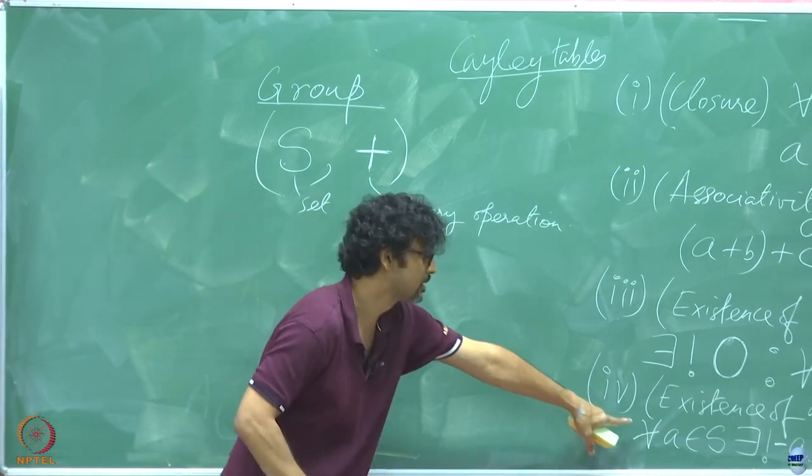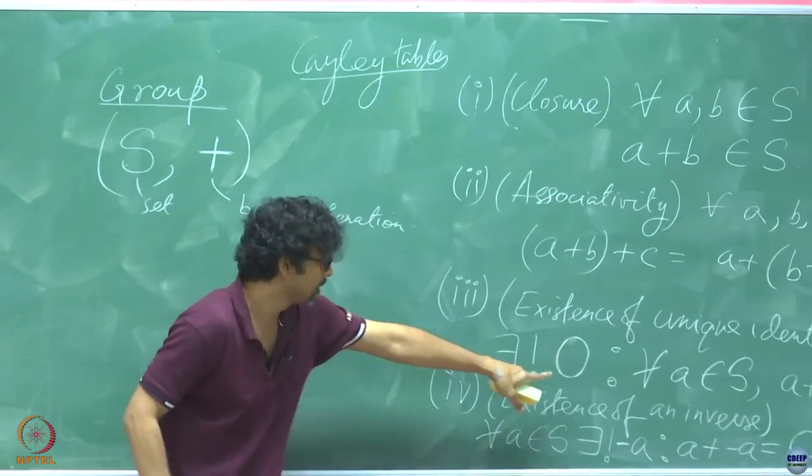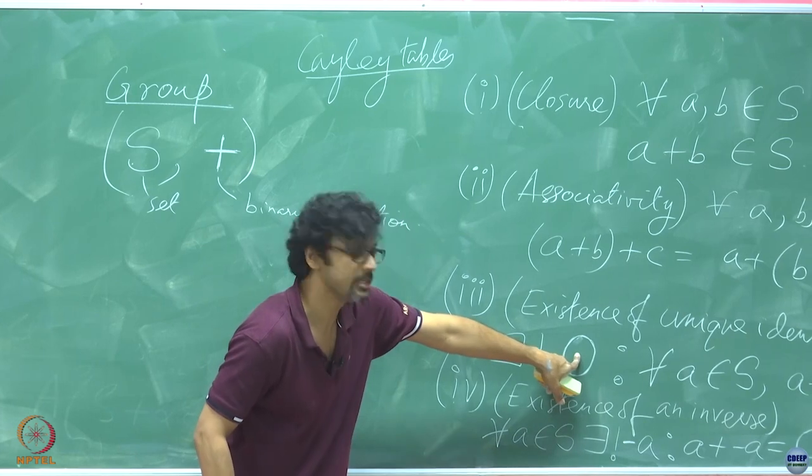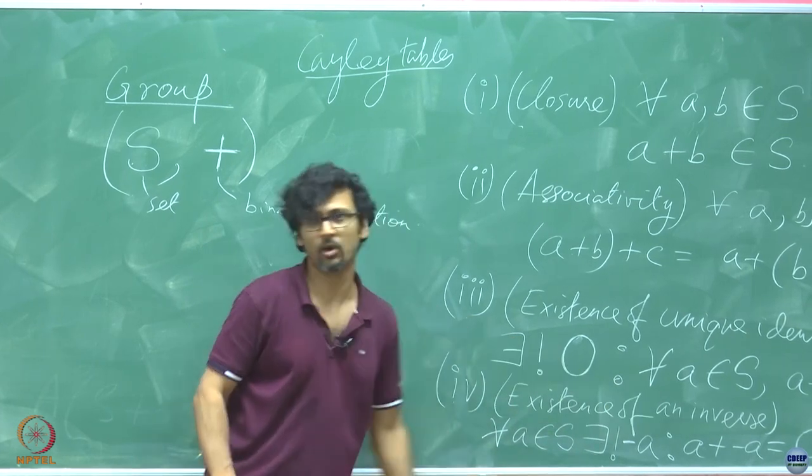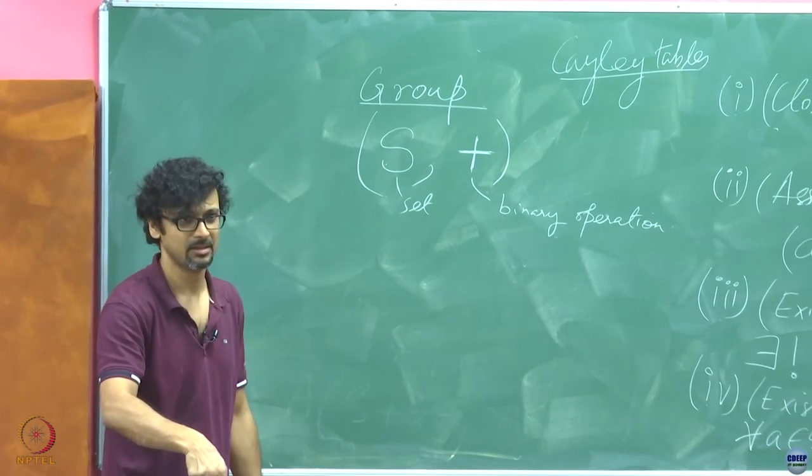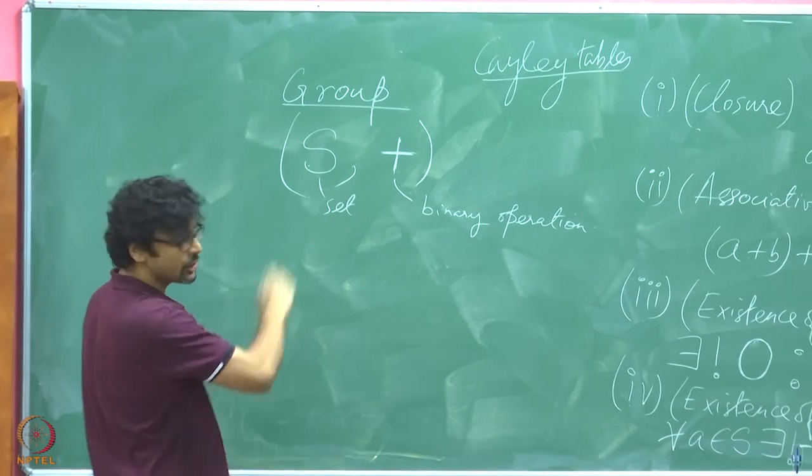You cannot have multiple elements which serve as the inverse of a particular element. That is what this uniqueness means. So, there is uniqueness in both the cases, but this is one size that fits all. This is the identity that works for everyone, but the inverse does not work for everyone. For everyone, there is one inverse.